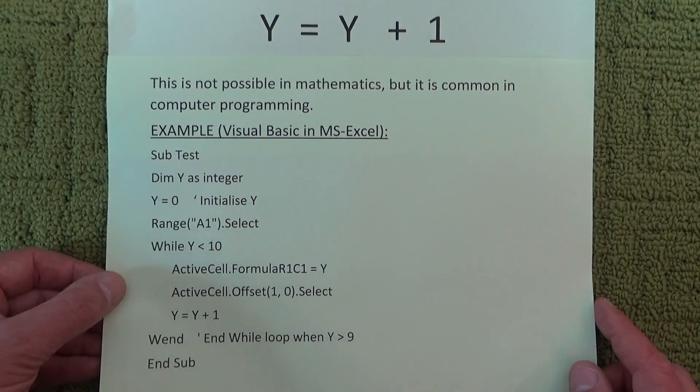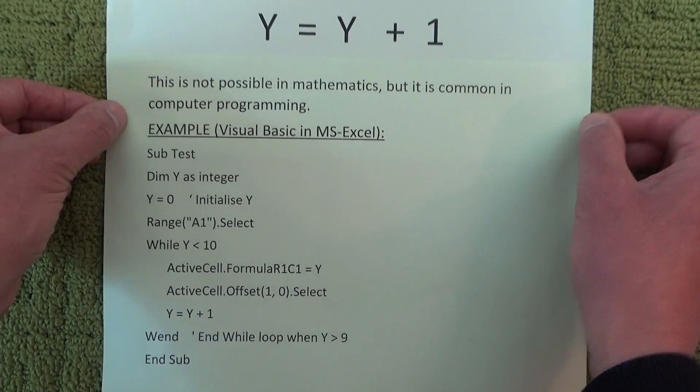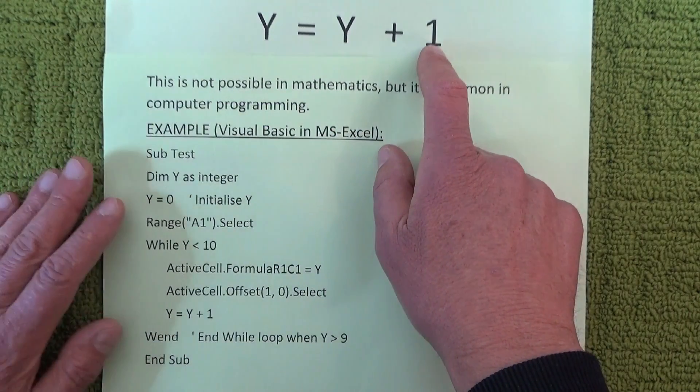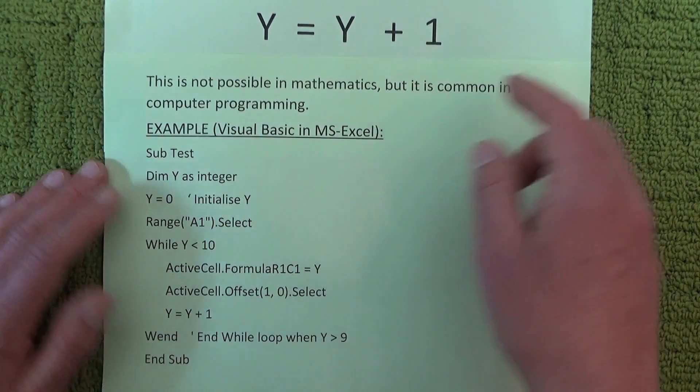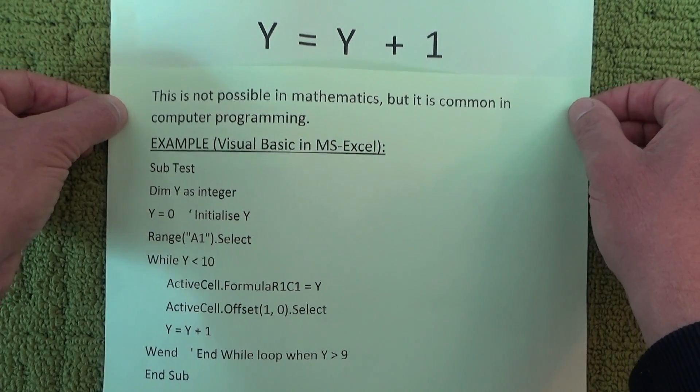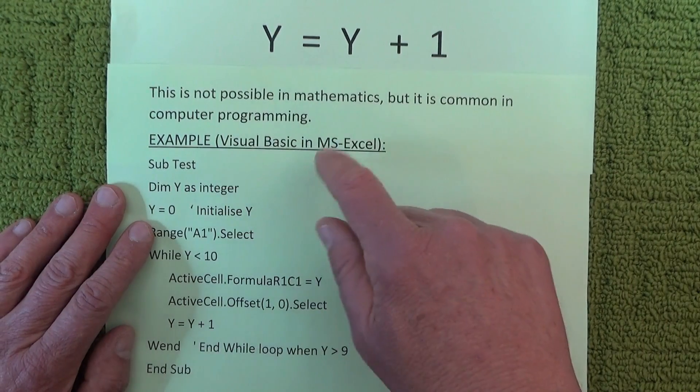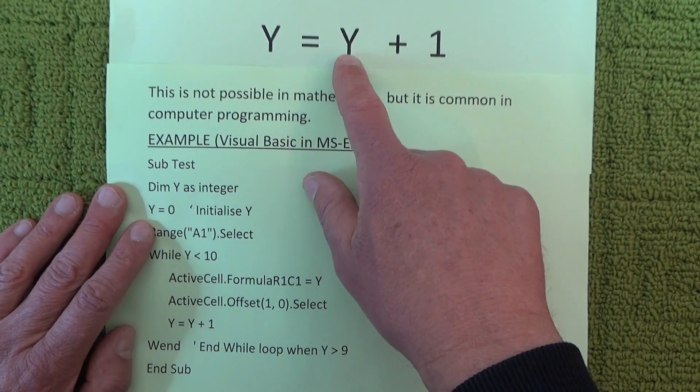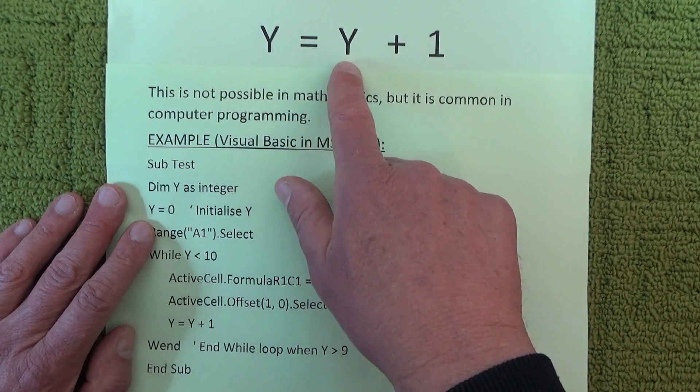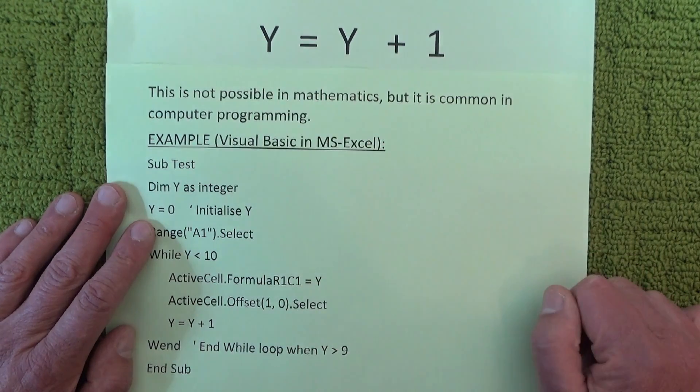So the answer then is that Y equals Y plus 1 is not possible mathematically. If you think about it, say you put in a few numbers just to test it. Say you put in Y equals 1 to test it, then you've got 1 plus 1 equals 2. So suddenly you've got Y equals 1 and Y equals 2.